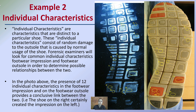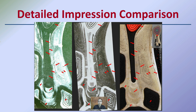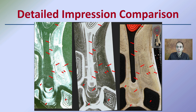Individual characteristics are very distinctive to that particular shoe. These consist of random damage on the outsole — if there's a piece of gum attached, or a crack in one of the areas of the shoe — this is really matching it up to something not found on all shoes. In the photograph above, there are about 12 individual characteristics highlighted in that comparison of the actual shoe to the impression. This is why a detailed impression is so important. Arrows indicate these individual characteristics so you can pick them out and identify them.